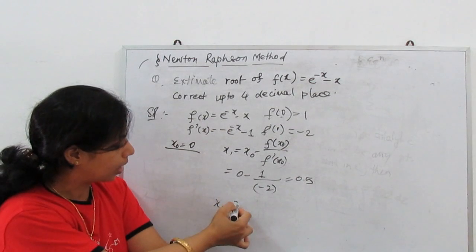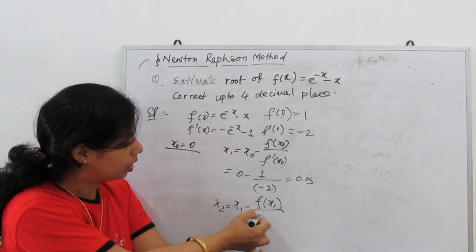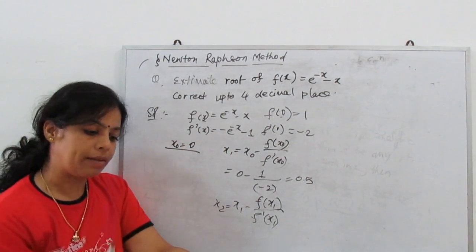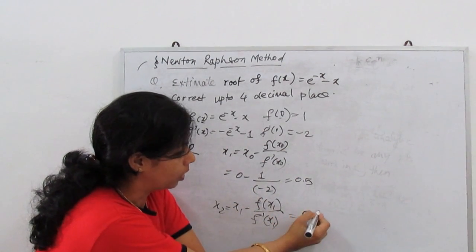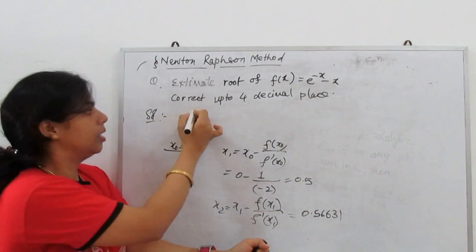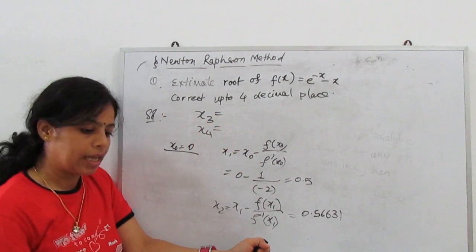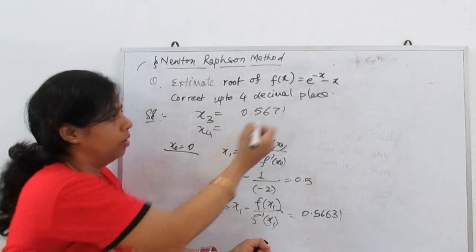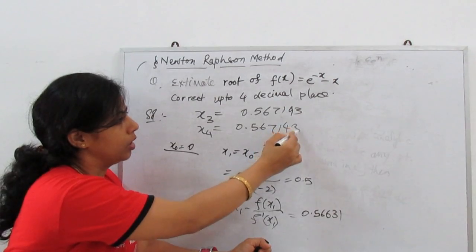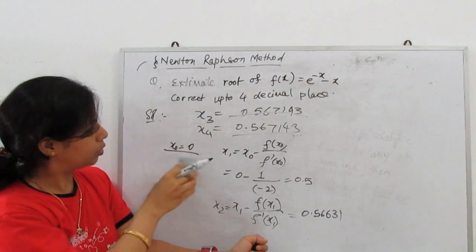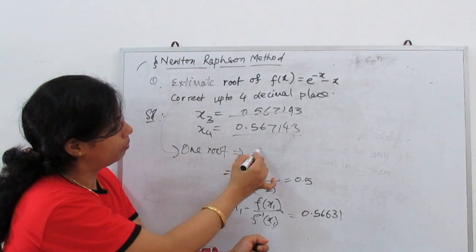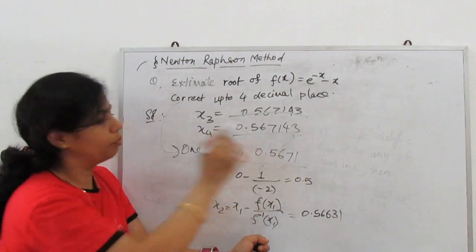Next, x₂ = x₁ − f(x₁)/f′(x₁). We substitute 0.5 and calculate, getting x₂ = 0.56631. Continuing with x₃ and x₄ using the same formula, x₃ = 0.567143 and x₄ = 0.567143 — the value repeats. Hence, our final solution up to 4 decimal places is 0.5671.